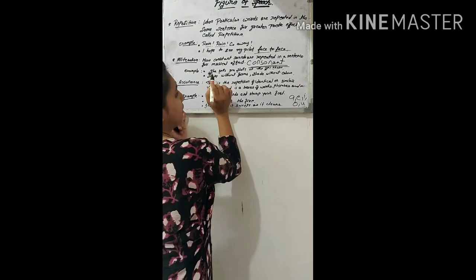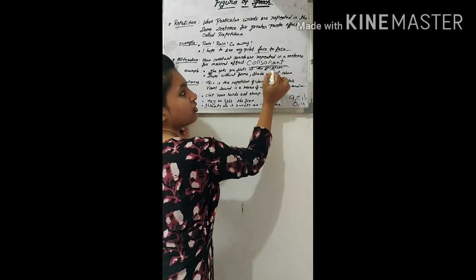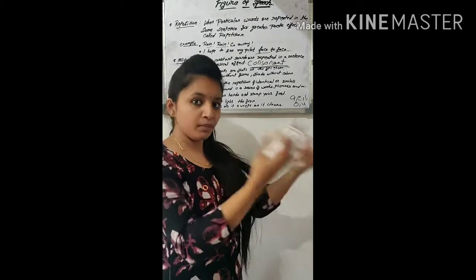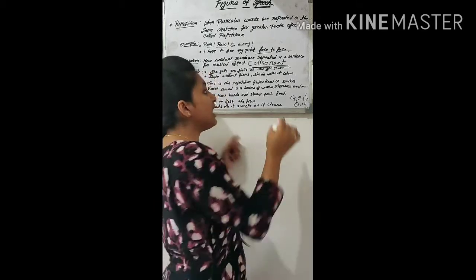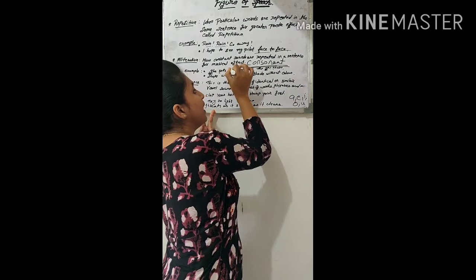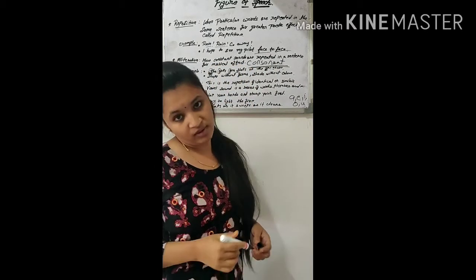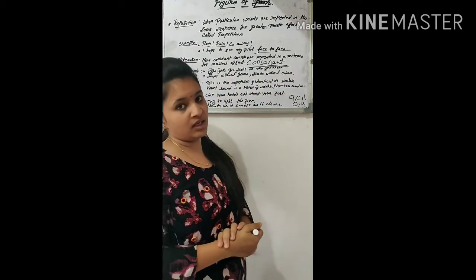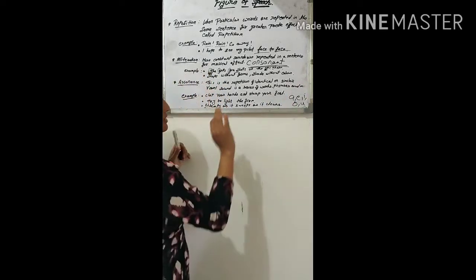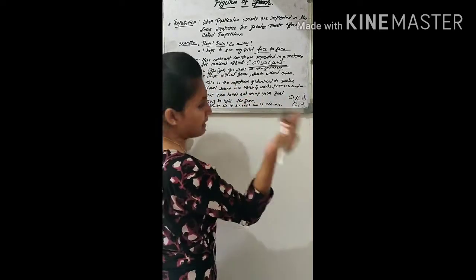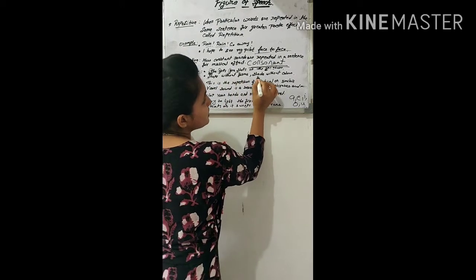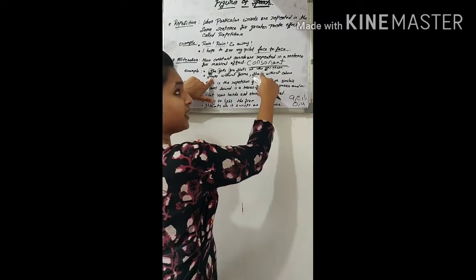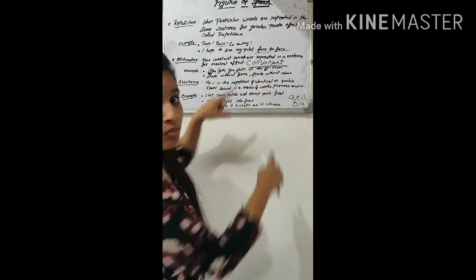For example, 'S' is a consonant. Look at this: 'She sells sea shells on the sea shore.' Here, 'S' is repeated at the beginning of each word more than twice — twice or more than once. So when 'S' is repeated like this, we consider it as alliteration. Another example: 'Shape without form, shade without color' — here 'sh' is the repeated consonant sound.